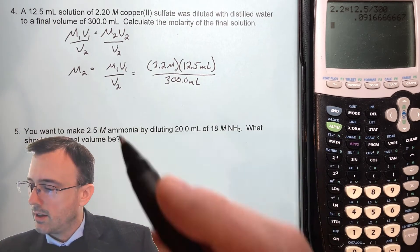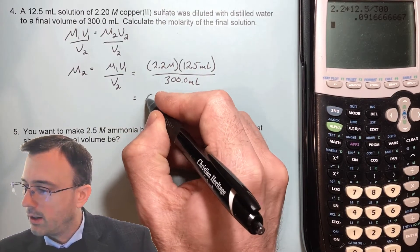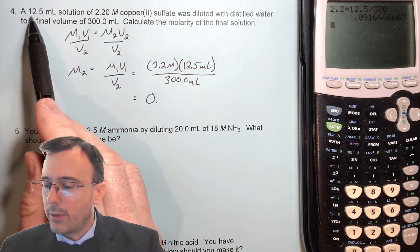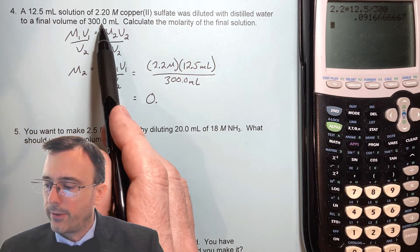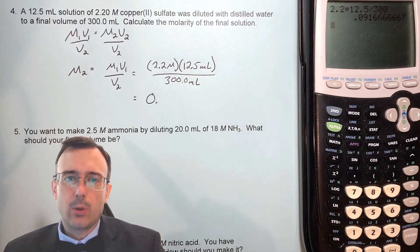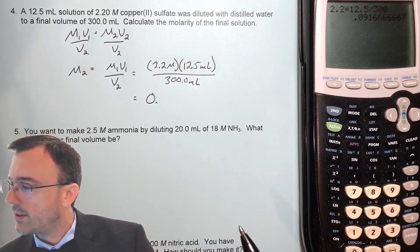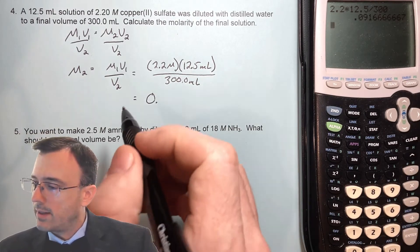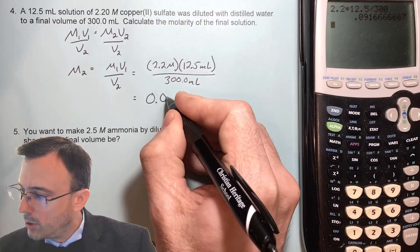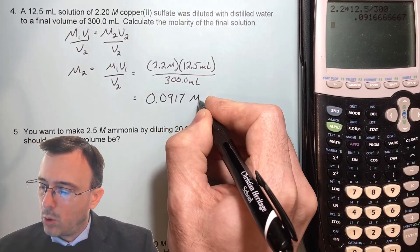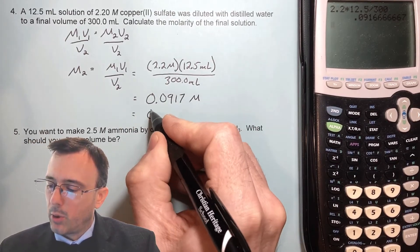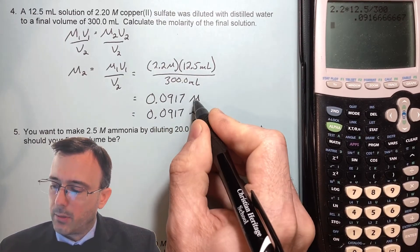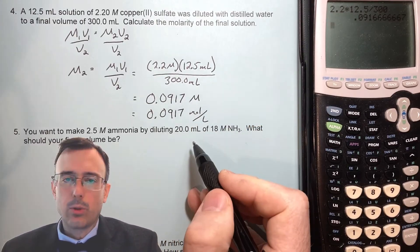That gives us a final molarity. Looking at our significant figures: we've got three sig figs for 2.2, three for 12.5, and four for 300, so our final answer should have three significant figures. The six rounds up to a seven because it's followed by a six, giving us 0.0917 molar — or 0.0917 moles per liter, since the capital M stands for moles per liter.